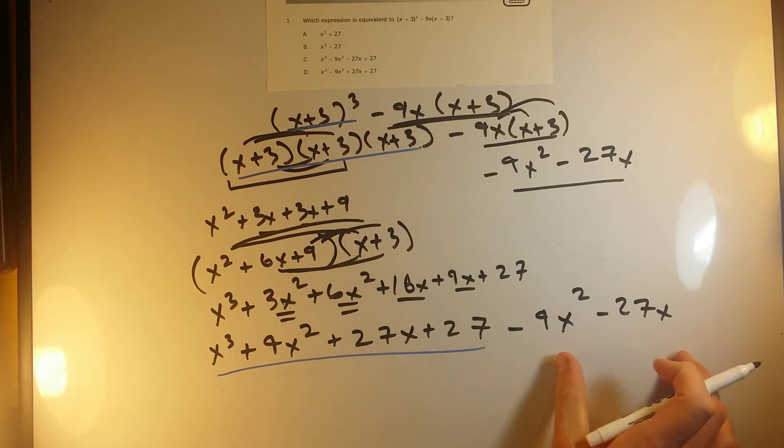Okay, so now that I've got all of my parts distributed, let's just see if there's other like terms we can combine. Okay, so x cubed, there's not anything over there. Plus 9x squared, minus 9x squared. Like 9 minus 9, these ones are just going to cancel each other out because they're like terms, and 9 minus 9 gives me 0. So those cancel out.